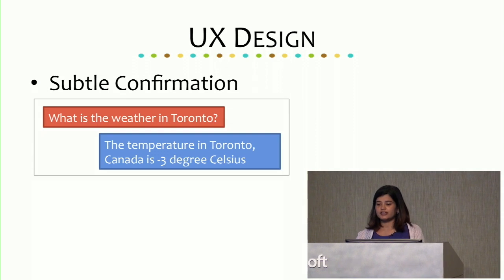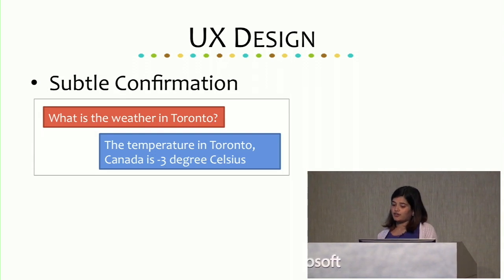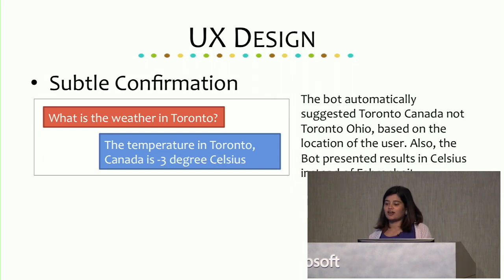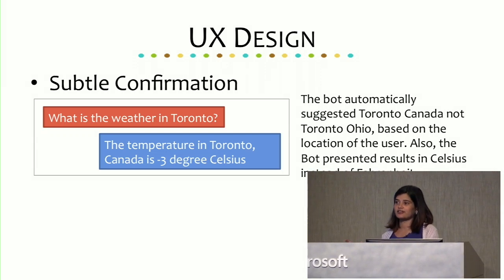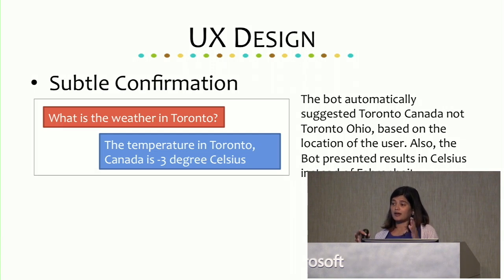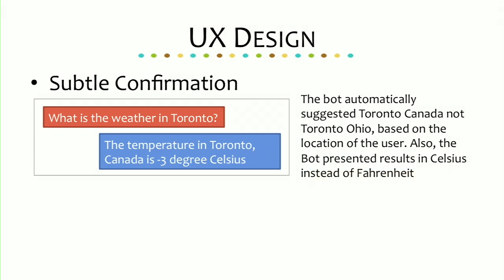UX design — here's an example of subtle confirmation. If somebody asks 'What's the weather in Toronto?' the system replies 'The temperature in Toronto, Canada is minus three degrees Celsius.' Interesting — it didn't look at Toronto, Ohio. It looked at Toronto, Canada, converted to degrees Celsius, and confirmed the location. Now the user can come back and say 'That's not the Toronto I was looking for,' and the chatbot can switch and tell you the temperature in Fahrenheit for that specific location. This shows how a chatbot can present information and leave it up to the user to interpret what they want.